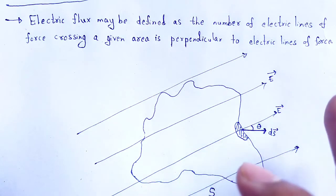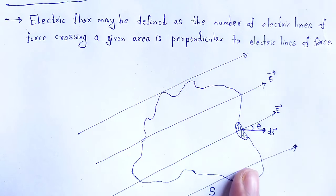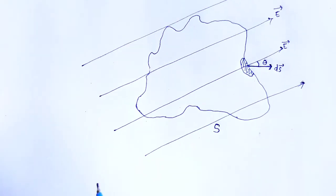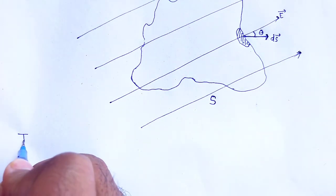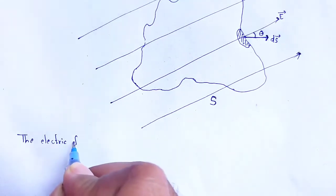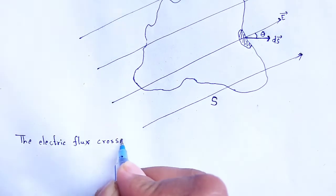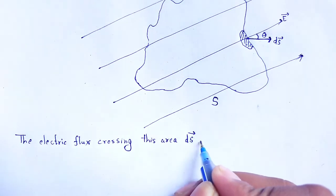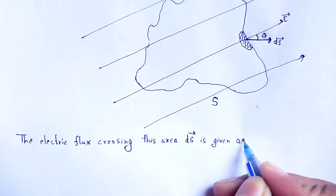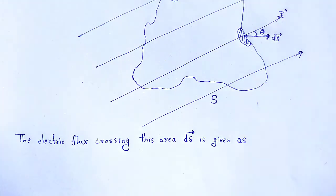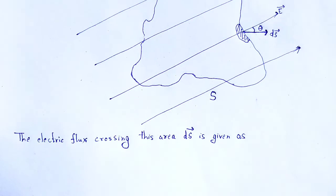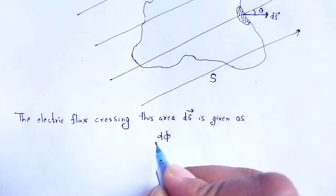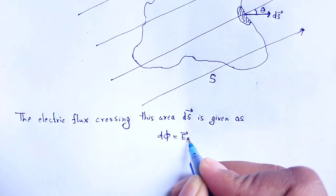Now we have to calculate the electric flux. We take the electric flux crossing this small area dS. The electric flux crossing this area — how many electric lines of force pass through the dS vector region — is given as d_phi, the electric flux. Mathematically, that is E vector dot dS vector.